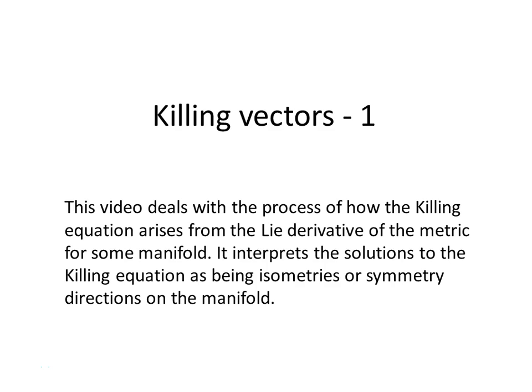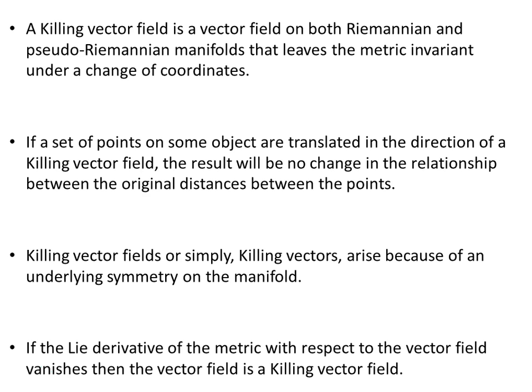This video looks at the process of the Killing equation and how it arises from the Lie derivative of the metric for some manifold. It then interprets the solutions to the Killing equation as being isometries or symmetry directions on the given manifold. A Killing vector field is a vector field on both Riemannian and pseudo-Riemannian manifolds that leaves the metric invariant under a change of coordinates.